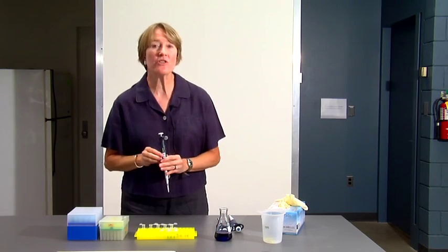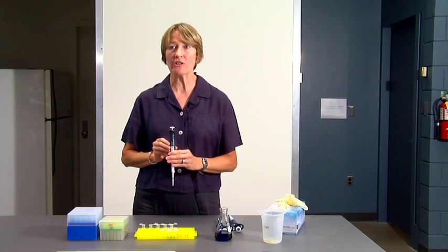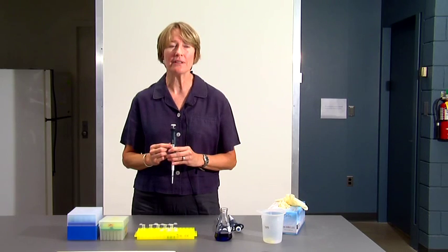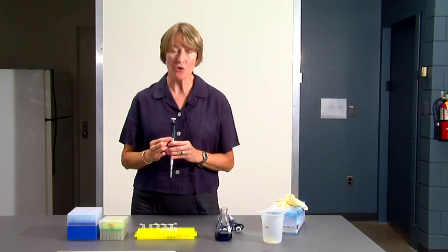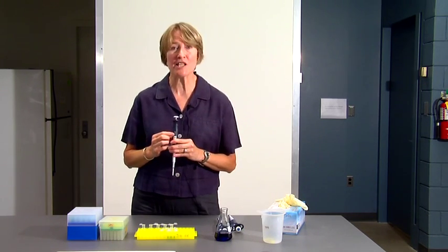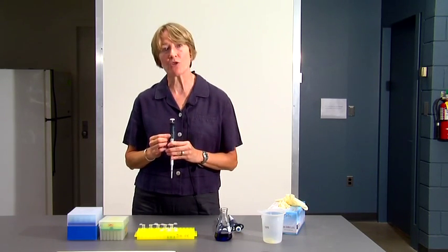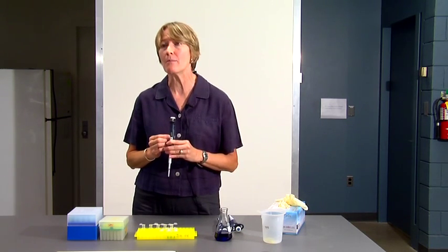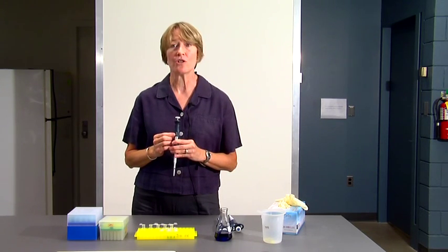The third pipet that we'll be using is the P20, which measures accurately 2 microliters to 20 microliters. This also has three numbers on the barrel. But notice that the bottom number is in red. That is an alert that tells you that bottom number is tenths. So there's a decimal point before that number. So if the dial reads 100, that stands for 10.0, or 10 microliters. If you wanted to measure 2 microliters, you'd set the dial on 020.